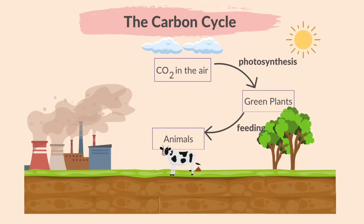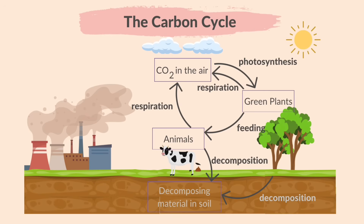Next, feeding. Animals obtain carbon by consuming plants and other organisms, so carbon is passed through the trophic levels in a food chain when feeding occurs. Carbon dioxide is released back into the atmosphere through respiration by plants, animals and microorganisms. Decomposition of dead organisms also releases carbon dioxide into the atmosphere.